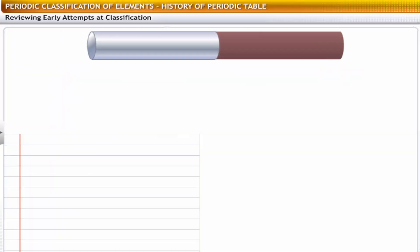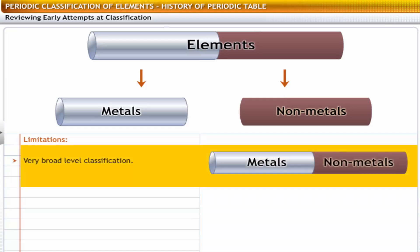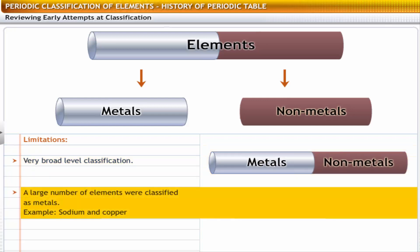The earliest classification categorized elements into metals and non-metals. However, this classification served only limited purpose because of the following reasons. The classification was at a very broad level. A large number of elements were classified as metals.